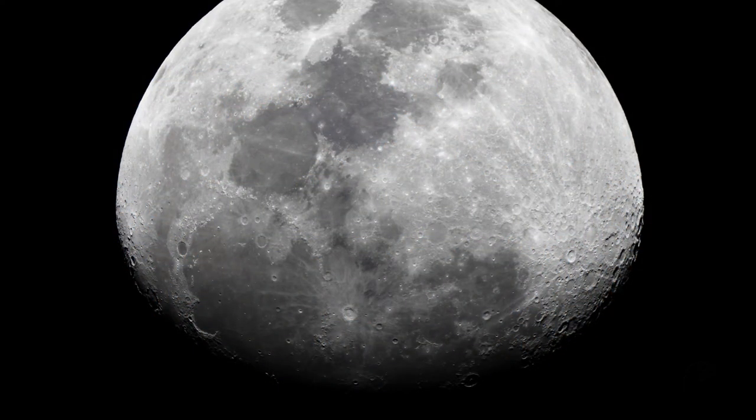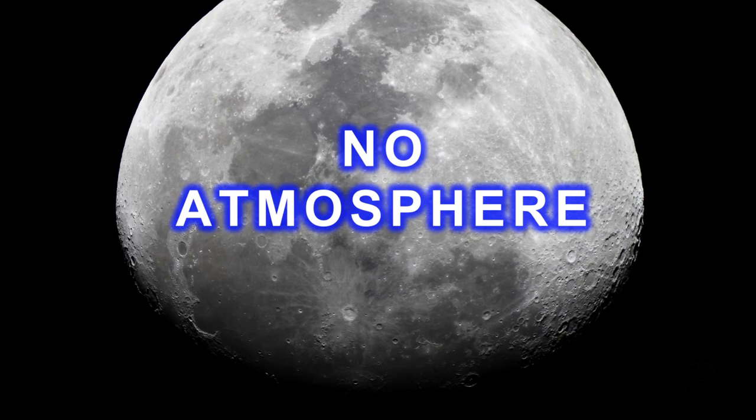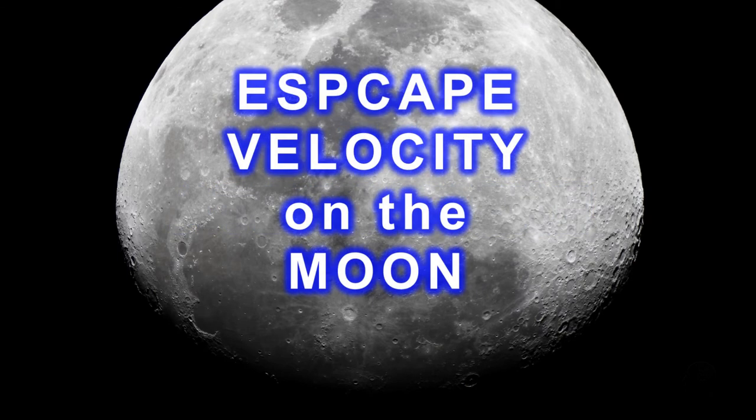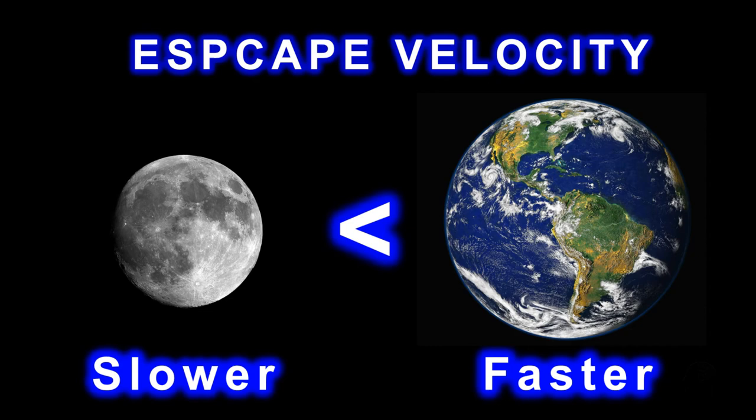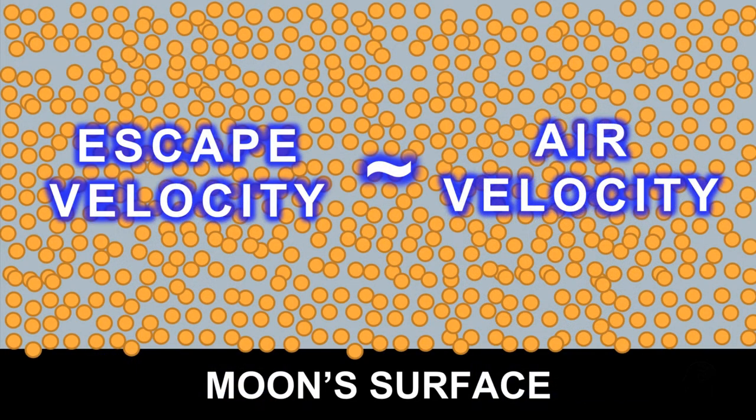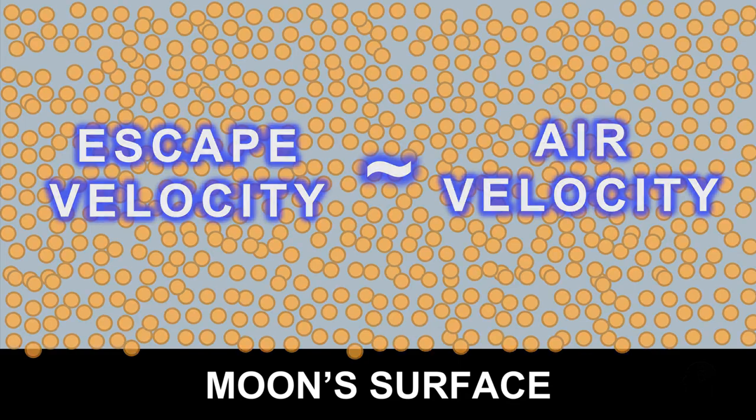And on the other hand, our Moon has no atmosphere because the escape velocity of the Moon is much slower than the Earth due to its smaller size and less gravitational pull. And air molecules on the Moon eventually escaped and disappeared, resulting in no atmosphere on it.